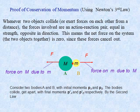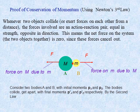Let's prove the conservation of linear momentum using Newton's third law. Consider two bodies of masses A and B with initial momenta PA and PB. The bodies collide and get apart with final momenta PA dash and PB dash respectively.